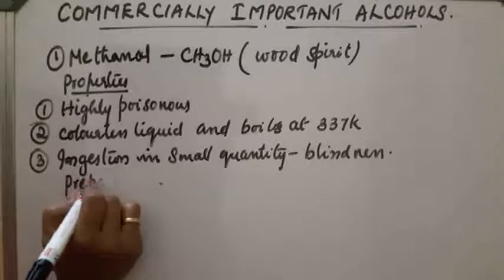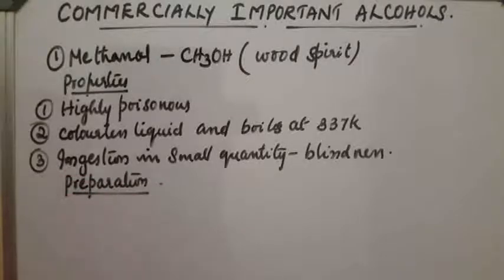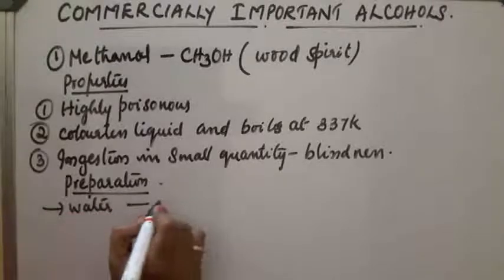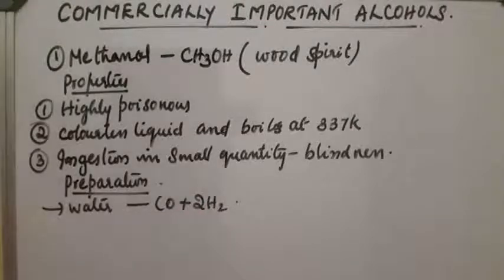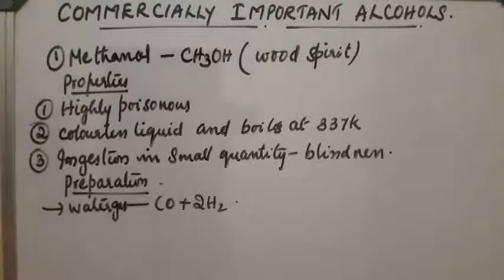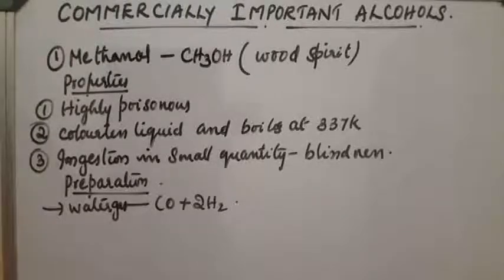Preparation: methanol is prepared from water gas. Water gas is a mixture of carbon monoxide and hydrogen. When water gas is passed over oxides of copper, zinc, and chromium at a temperature of 573 Kelvin and 200 atmospheric pressure, the reaction takes place and it gets converted into alcohol.